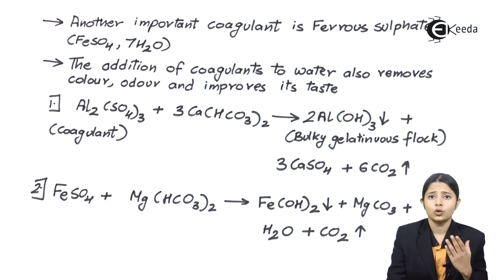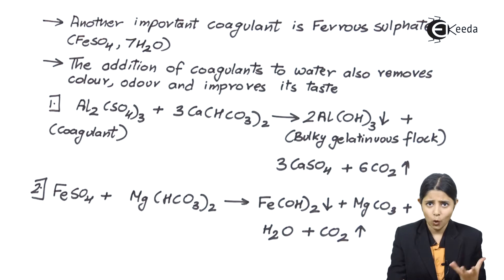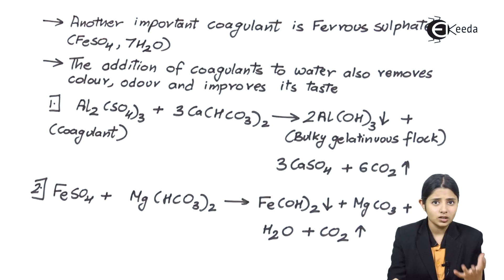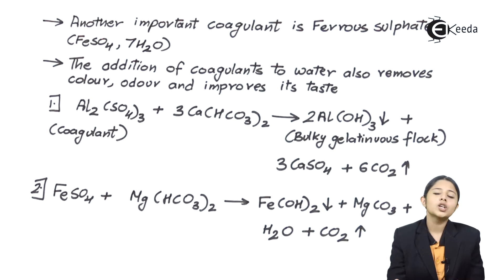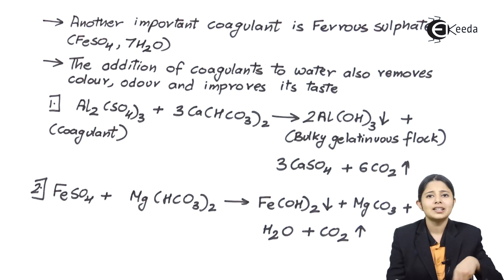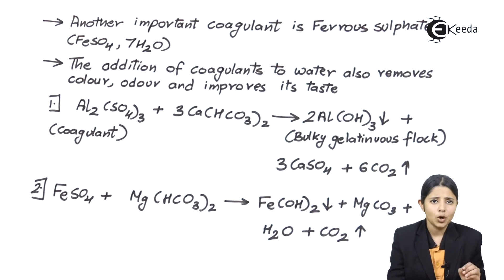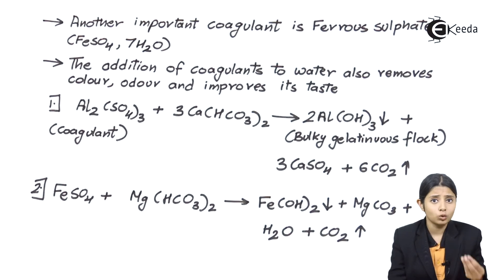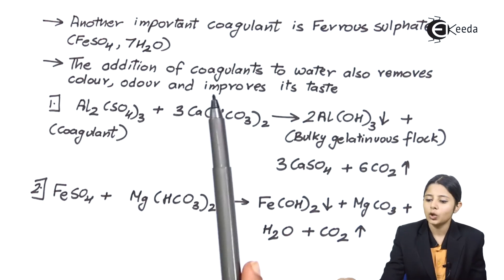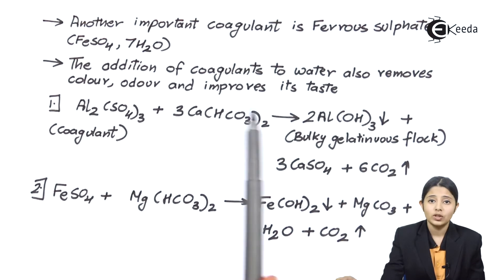These colloidal particles cannot be seen with the naked eye but are present in large amounts, which is why the color of the water can change. We can see the water is impure but cannot make out exactly what the impurity is, because the impurity is in its colloidal form and gets easily mixed in water. We know from the color or odor that the water is impure, but once we use coagulants, they not only remove impurities but also change the color, odor, and improve the taste.